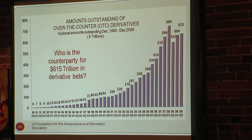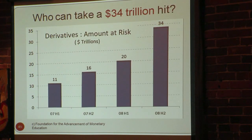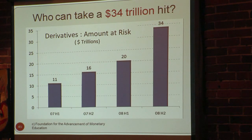They can't lose the whole 615 trillion — that's the notional amount — but the Bank for International Settlements calculates the amount actually at risk, and what they tell us is that the amount at risk is 34 trillion dollars. Why are we guaranteeing the balance sheets of the banks? Why are we subsidizing them? The wake-up call came when we had the market crash in 2008 and 2009, when the Dow Jones Industrial Average collapsed from something like 12,000 to around 6,500.